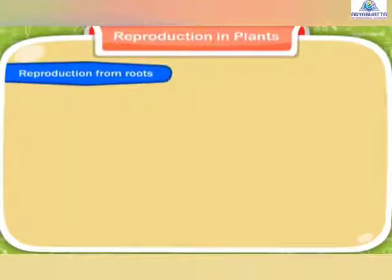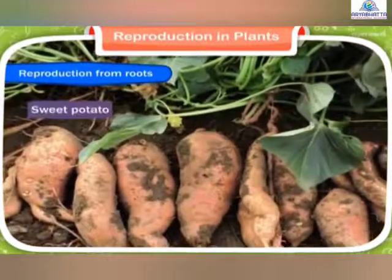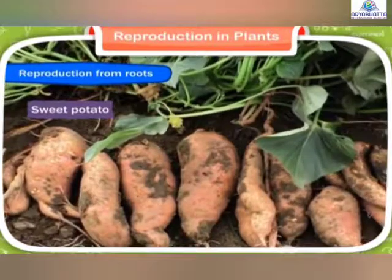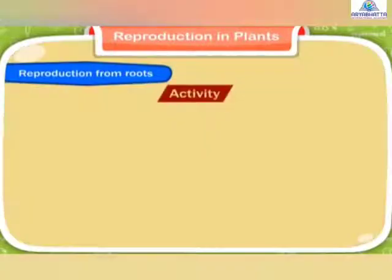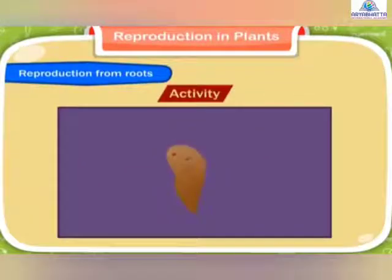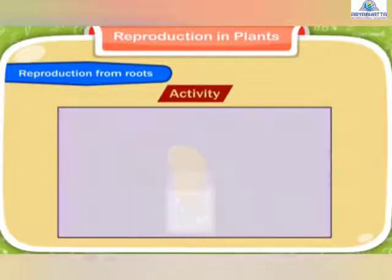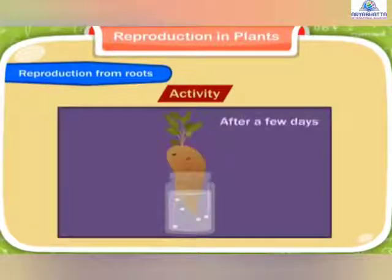Reproduction from roots. The roots of plants like sweet potato grow as new plants. Activity: Take a sweet potato and support it in a bottle containing water using toothpicks. You will find that after a few days, a new plant grows in the bottle.